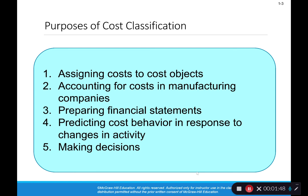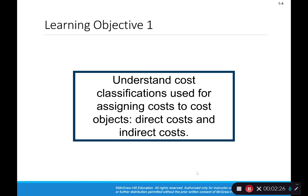We need to understand cost classification because it helps us account for costs in manufacturing companies. Manufacturing companies incur different types of costs, and we need to track those because they're treated differently on the financial statements. Understanding how costs behave is also very useful in predicting future costs, which is a main focus of managerial accounting, and it helps us make better business decisions.